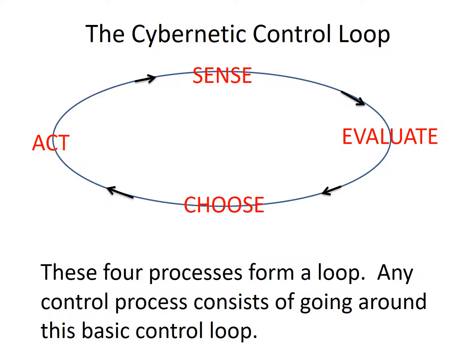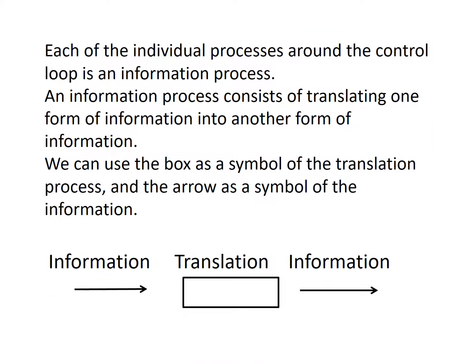The cybernetic control loop consists of these four basic processes: you act, sense, evaluate, and choose. These four basic processes form a loop. Any control process consists of going around this basic control loop.